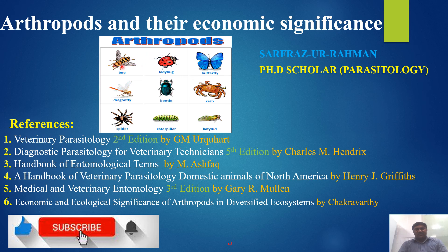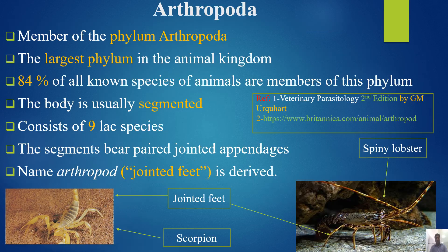These are the different arthropods you can see in this picture. Arthropoda is the member of phylum Arthropoda, and this is the largest phylum in the animal kingdom. 80% of all the known species of animals are the members of this phylum.